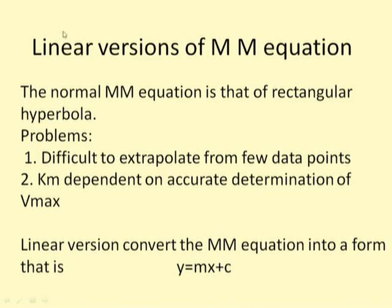The Michaelis-Menten equation is that of a rectangular hyperbola. When practically carrying out experiments to determine Km and Vmax, using this equation and plot directly has problems. It is very difficult to extrapolate from few data points, and one needs to cover the whole range of substrate concentrations. Also, Vmax must be accurately determined first, since Km is defined as the concentration giving 50% Vmax. This plot is practically not very popular.